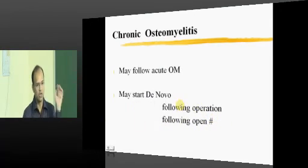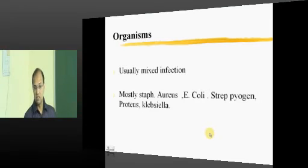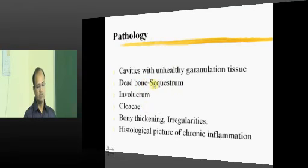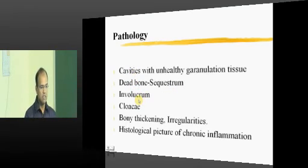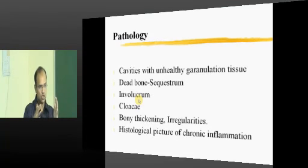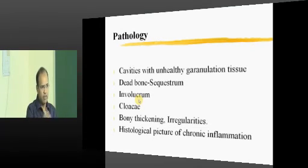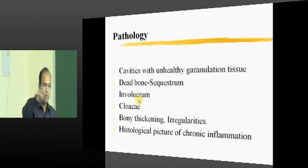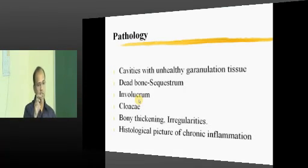Chronic osteomyelitis most often starts as acute osteomyelitis transitioning to the chronic phase. Organisms in chronic osteomyelitis are usually mixed compared to acute hematogenous osteomyelitis. Cavities with unhealthy granulation tissue and a sequestrum are present. When there is periosteal irritation, the body forms new bone around the sequestrum called the involucrum. If the pent-up pus mounts pressure, it tries to escape through this new bone, making a rent called the cloaca. New bone formed by the periosteum is the involucrum, and a hole within it is the cloaca.